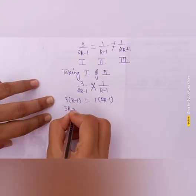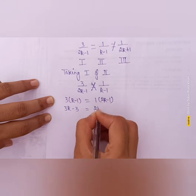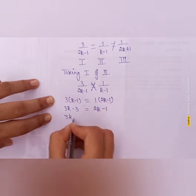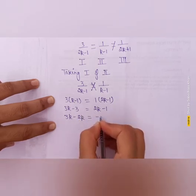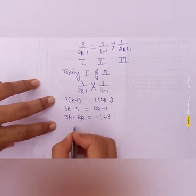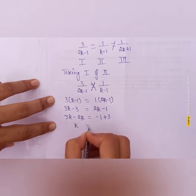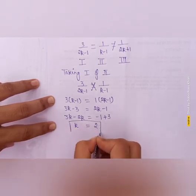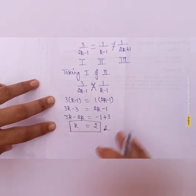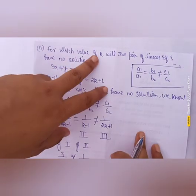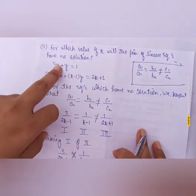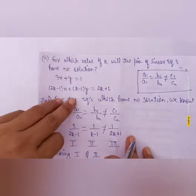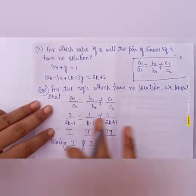Cross multiplying: 3(k − 1) = 1(2k − 1), giving 3k − 3 = 2k − 1. Solving: 3k − 2k = −1 + 3, so k = 2. We have found our answer. They were asking for which value of k the pair of linear equations will have no solution — if we apply k = 2, then this pair of linear equations will have no solution.